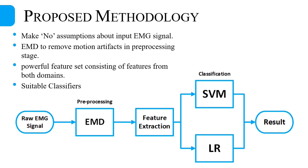The proposed system of classification includes a pre-processing stage where we use empirical mode decomposition to remove baseline noise or motion artifacts from the raw EMG signal. Then a powerful feature vector consisting of statistical features and spectral features is extracted from the pre-processed signal. Lastly, these features are fed to support vector machines and logistic regression classifiers to obtain the best classification results. The proposed system makes no prior assumption about signal acquisition conditions and can handle wide variability within an EMG signal.